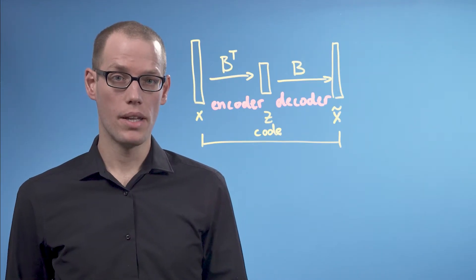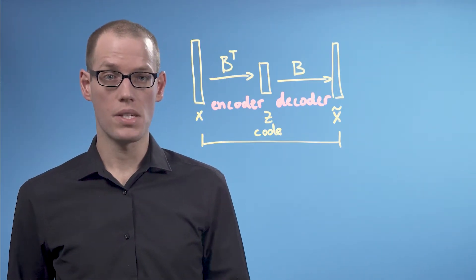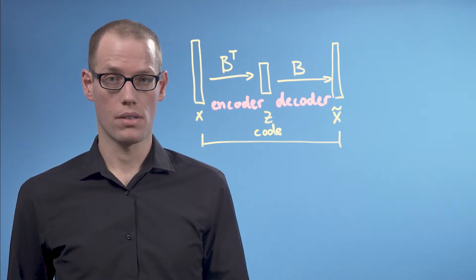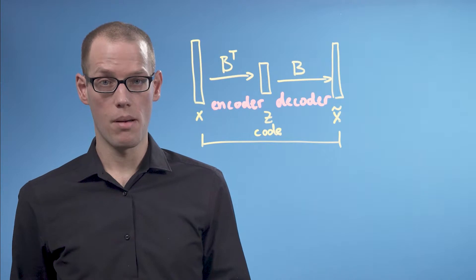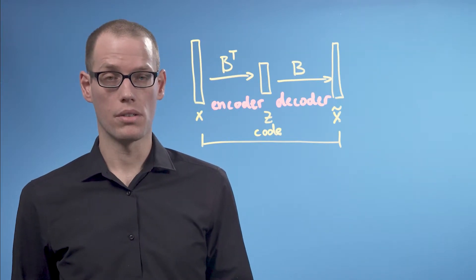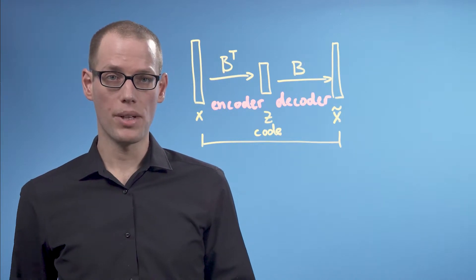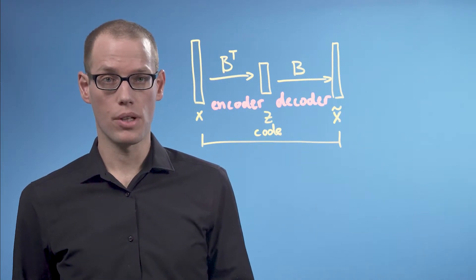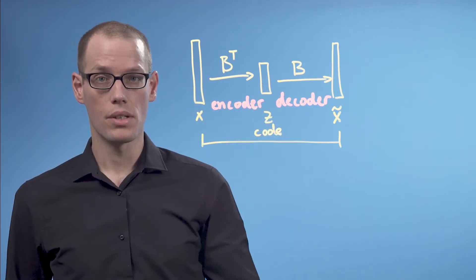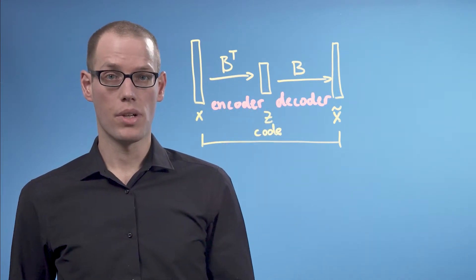If the encoder and decoder are linear mappings, then we get the PCA solution when we minimize the squared autoencoding loss. If we replace the linear mapping of PCA with a non-linear mapping, we get a non-linear autoencoder. A prominent example of this is a deep autoencoder where the linear functions of the encoder and decoder are replaced with deep neural networks.